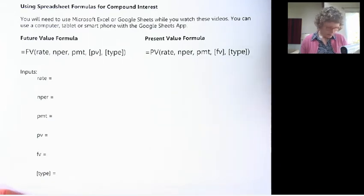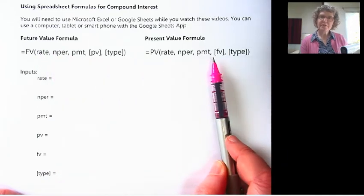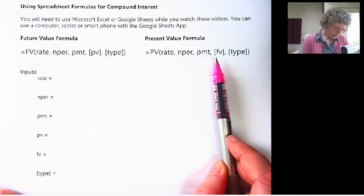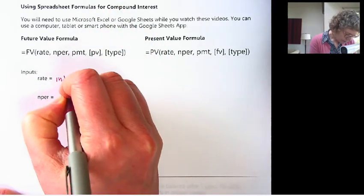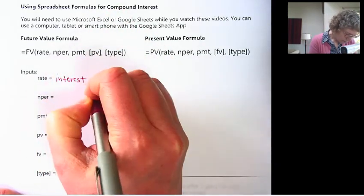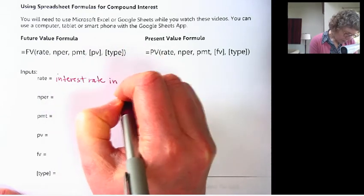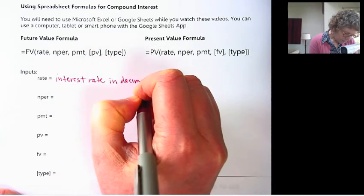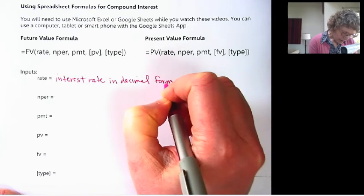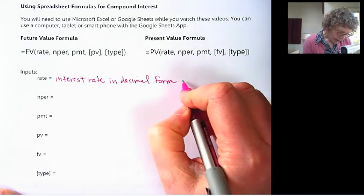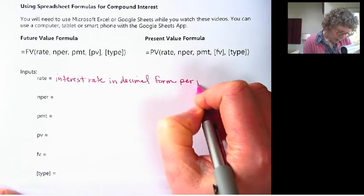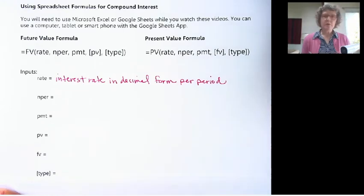So the rate, both of these, I'm doing them at the same time because they have very similar inputs. In fact, most of the same inputs. So the rate is the interest rate in decimal form. Just how you saw in the last video that we were changing our interest rate into decimal form. 6% is .06.